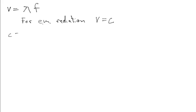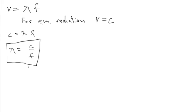So we have c = λf. Solving for lambda for the case where we're given the frequency: λ = c/f. And solving the same equation for f for the case where the wavelength is given: f = c/λ. That's our whole algebraic solution.